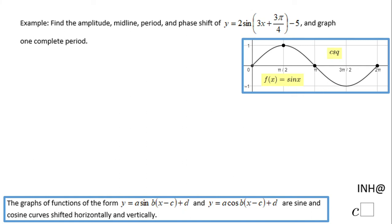Welcome back to C-Squared. In this example we need to find the amplitude, the midline, the period, and the phase shift of the trigonometric function y equals two sine of (3x + 3π/4) minus five, and we need to draw one complete period.